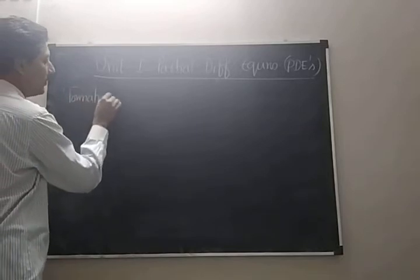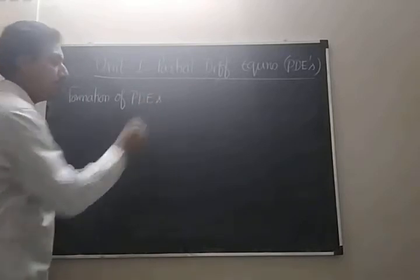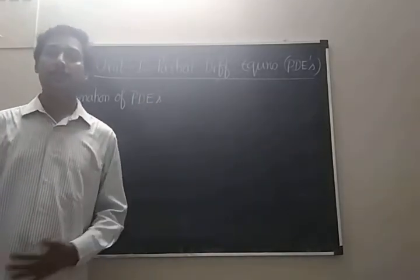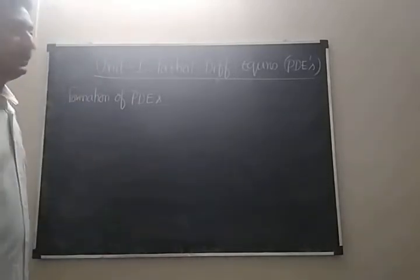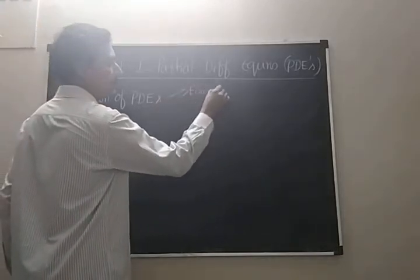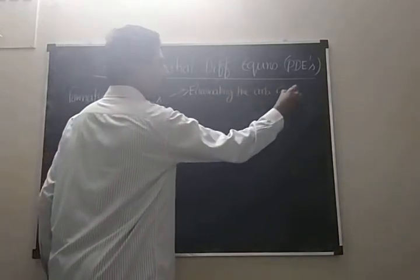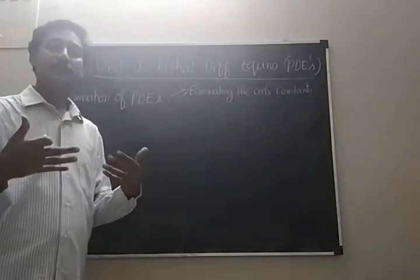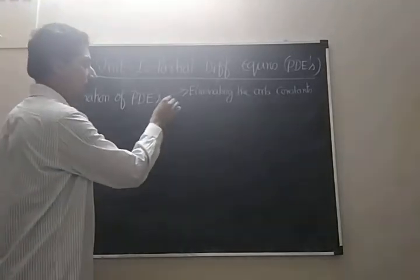Under this, the first one is the formation of PDEs. Formation of PDEs, how to frame or find or construct the partial differential equations. And there are two techniques to frame the PDEs. The first one is eliminating the arbitrary constants. If some arbitrary constants are involved in the given relationship, then we eliminate those constants.